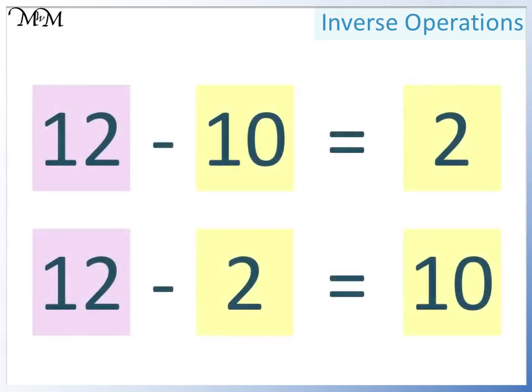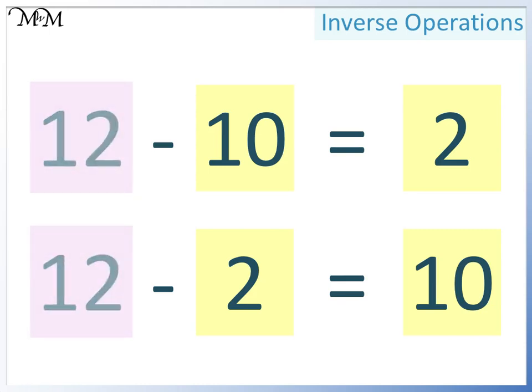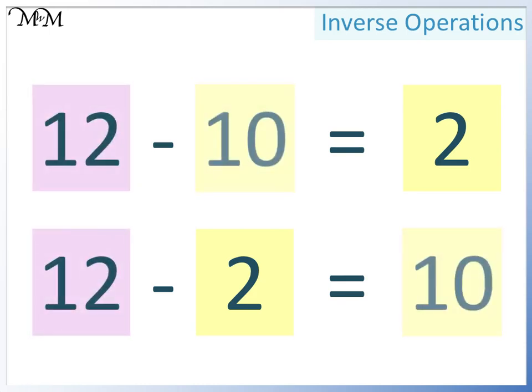So we have 12 take away 10 equals 2, and 12 take away 2 equals 10. As long as the largest number is at the start, the order of the two smaller numbers doesn't matter.